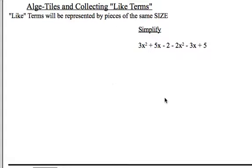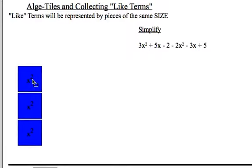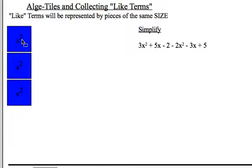Let's try something a little larger. Again, remember, like terms will be represented by pieces of the same size. So when we look here, we have x squared terms now, x terms, and just constants. So I'm going to let the x squared terms be represented by the largest of the algebra tiles. So there's my 3x squared, right there.